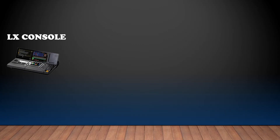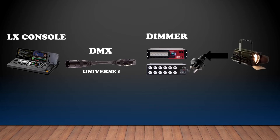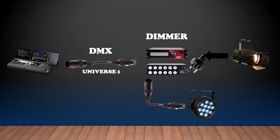So now let's add some more lights into our signal flow. We have the lighting console going from universe 1 to the dimmer, and from the dimmer we go to the Fresnel. Now we have another light, an LED one, which will be the LED PAR quad 12. So now we can actually go from the dimmer to the LED light. I just wanted to point out that the dimmer has a DMX in and a DMX out, and we're using only one DMX stream — going from the lighting console into the dimmer, and then the dimmer is working as a bypass into the LED light.